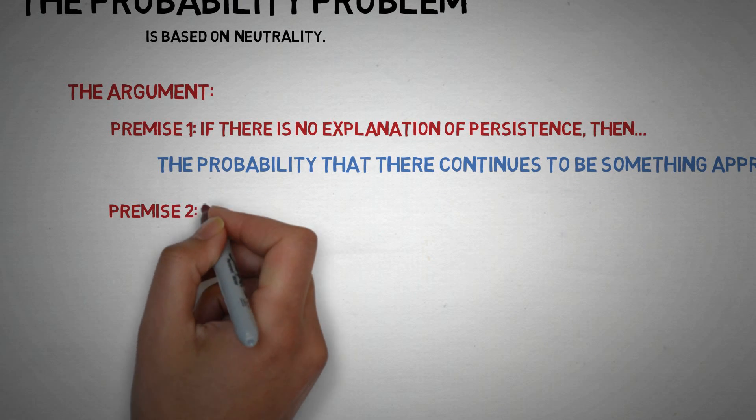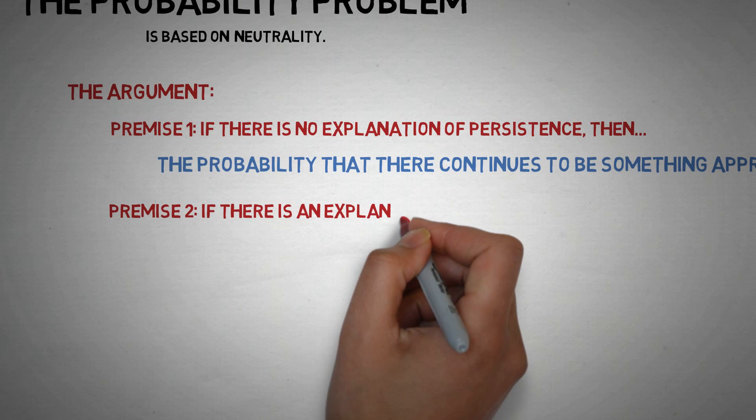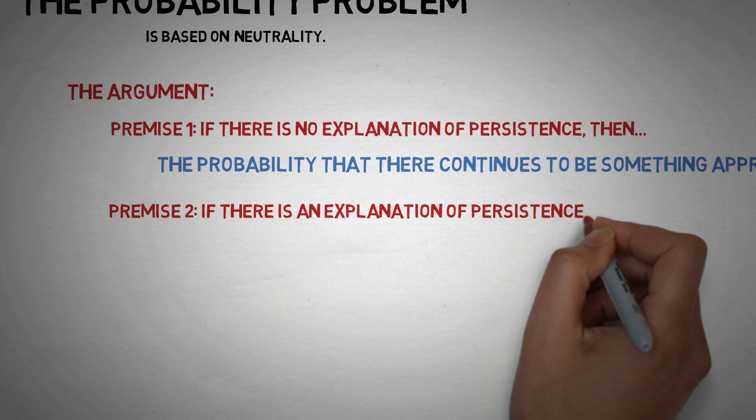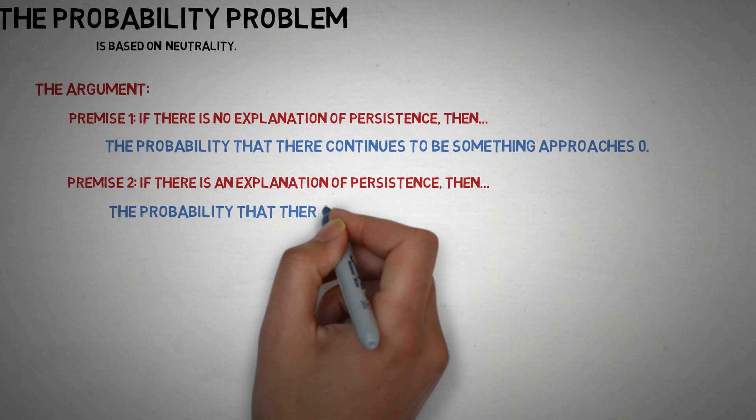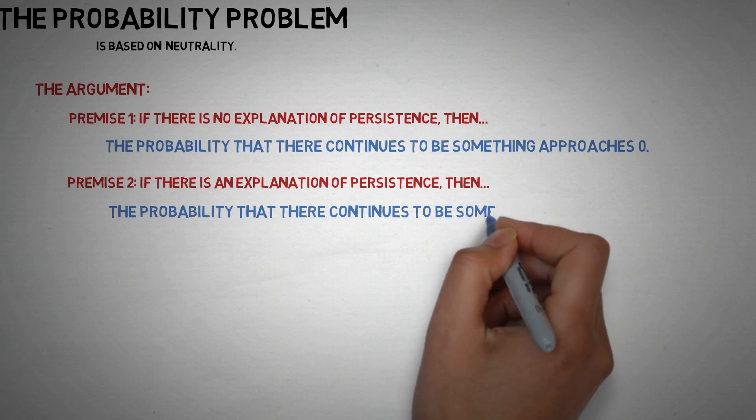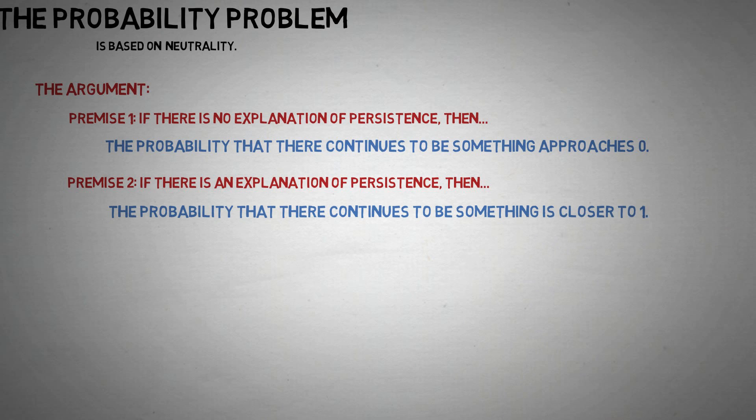Premise 2. If there is an explanation of persistence, such as in terms of necessary existence, then the probability that there continues to be something, moment after moment, is much closer to 1.